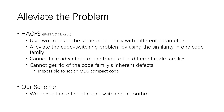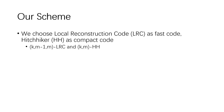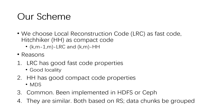In our scheme, we present an efficient code switching algorithm. We choose LRC as the fast code and Hitchhiker code as the compact code. Specifically, we use (K, M-1, M) LRC and (K, M) Hitchhiker code. There are several reasons: first, LRC with good locality has low degraded read cost; second, Hitchhiker is an MDS code, which is best for storage cost; third, these are commonly used codes implemented in HDFS or Ceph; and finally, they are very similar — both are based on RS codes, and data chunks are grouped when encoding in both.